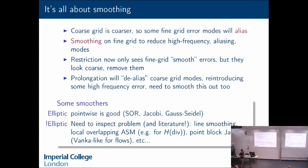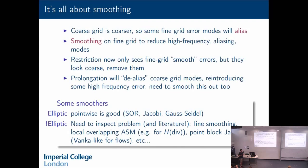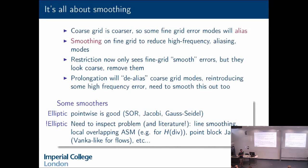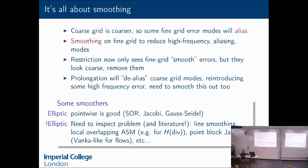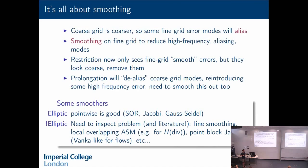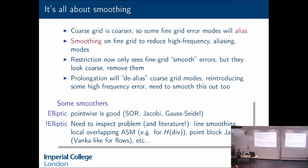Some smoothers: if your problem is elliptic, point-wise is good — something like SOR, Jacobi, or Gauss-Seidel. If your problem is not elliptic or only partially elliptic, you need to inspect the problem in the literature and read lots. You might want to do line smoothing, or local overlapping additive Schwartz smoothing, especially if you're in H-div or H-curl. If you have flow problems, you might want to do something like Vanka-type smoothing, where you do point-block Jacobi on all little coupled blocks of degrees of freedom.